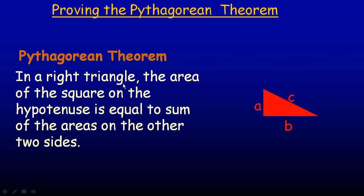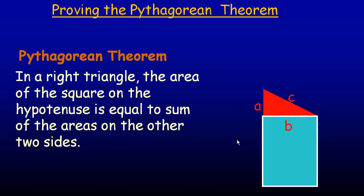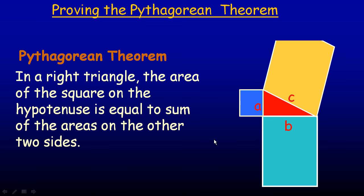The area of the square on the hypotenuse is equal to the sum of the areas on the other two sides. So if we were to draw squares on the sides of this triangle like this, the Pythagorean Theorem says that this area plus this area is equal to the area of the square on the hypotenuse.